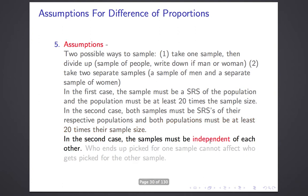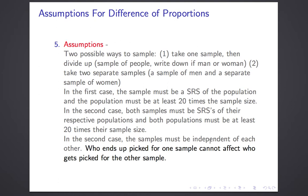The independence assumption is almost always obviously true. The only time it's not met is in a matched pairs study — for example, if you sampled married couples and put the wife in one sample and the husband in the other. Then who's in one sample affects the other. We'll talk later about what to do in that unusual setup, but it mostly doesn't come up.